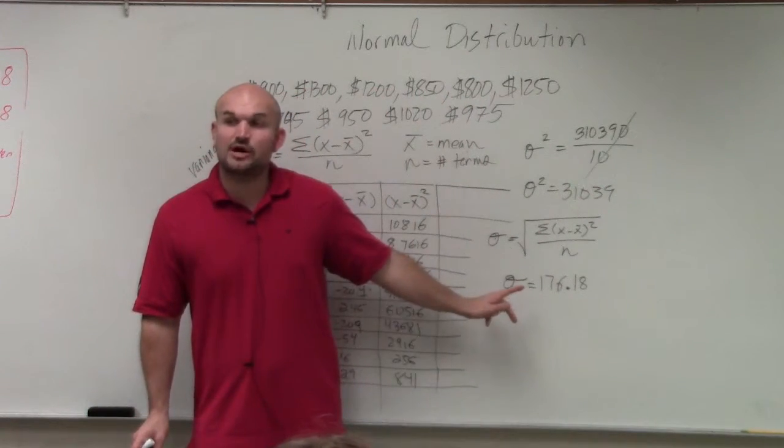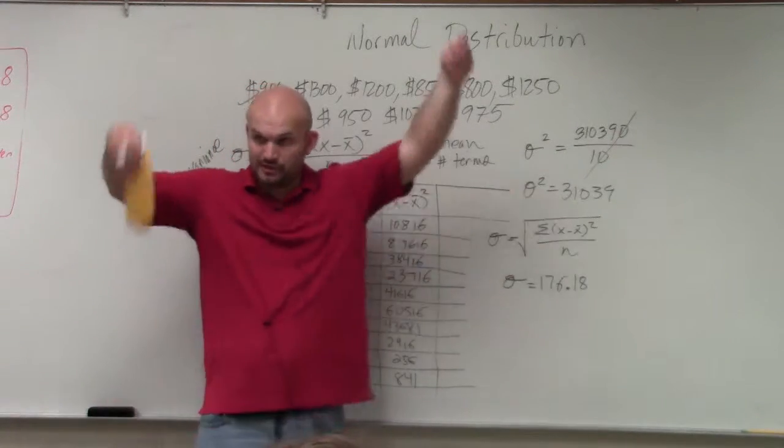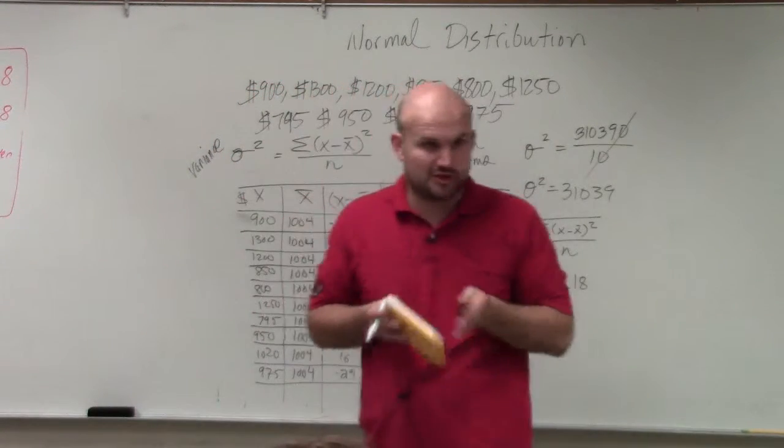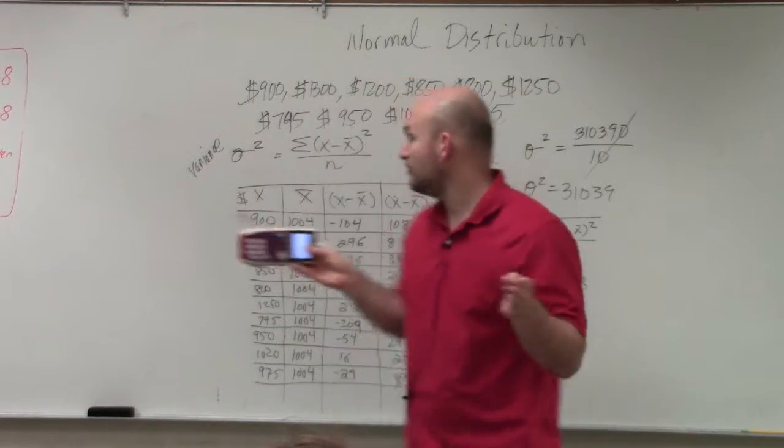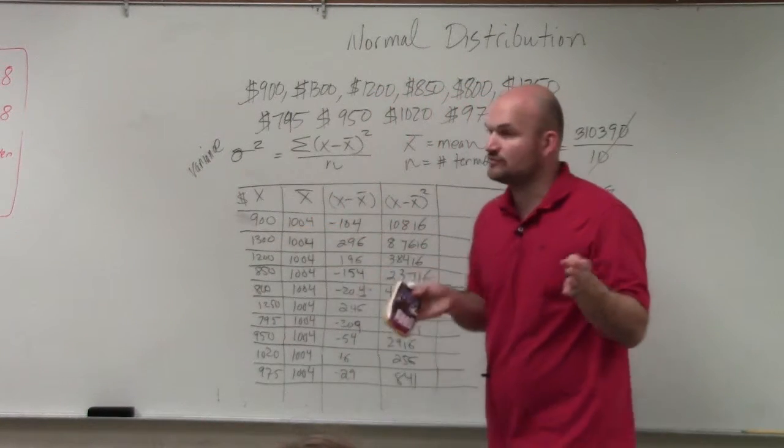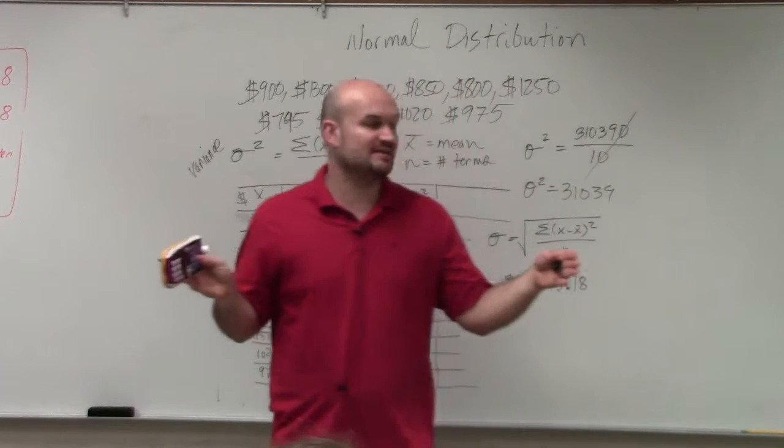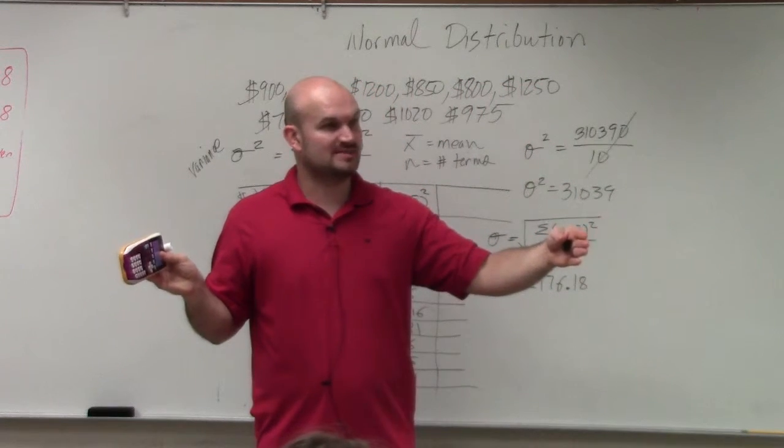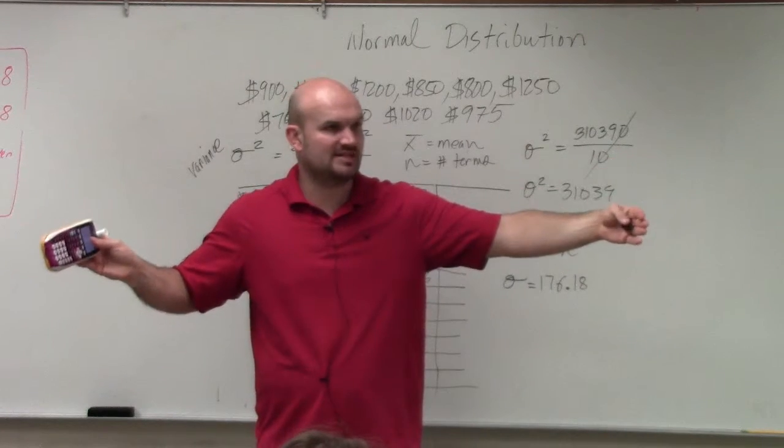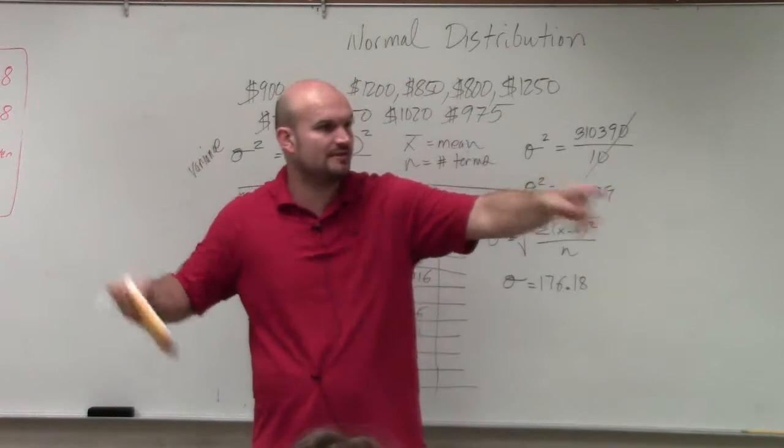Does everybody see that? So our standard deviation, if we were going to do a standard deviation, a normal distribution curve, one standard deviation from our mean, which is 1,004, we would add 176.18 and subtract 176.18 to get our first standard deviation. And then we'd do that again for the second standard deviation and do that again for the third standard deviation.